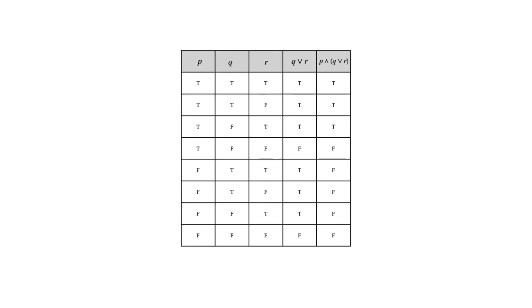Here's a truth table for the first one. I want to say a couple things about the process. In the previous video about section 2.1, we didn't look at any examples that had three variables. This one does have three variables: P, Q, and R. Because of that, we need eight rows. It's always going to be two raised to the power of the number of variables — two variables means four rows, three variables means eight rows, four variables would mean 16 rows.